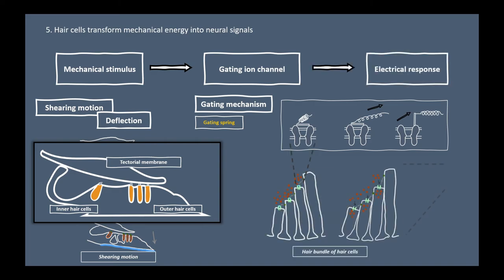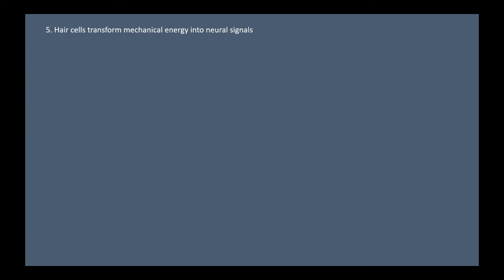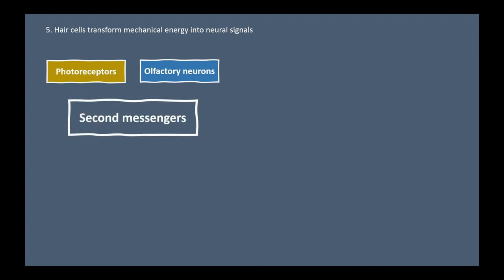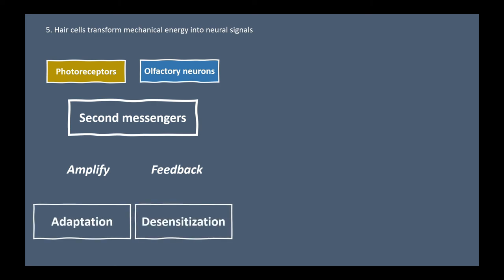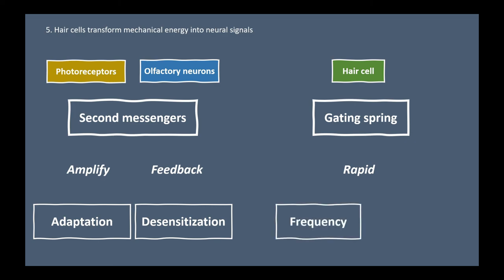This gating spring mechanism is a really fast procedure. Many other sensory receptors like photoreceptors or olfactory neurons use cyclic nucleotides or other second messengers in stimulus transduction. The advantage of this transduction is that a second messenger amplifies the signal and gives feedback within the metabolic pathway, readily permitting adaptation and desensitization. Without those, like hair cells, the advantage is the speed. The speed is really important for hair cells to deal with the frequency of biological relevant sound and using sound arrival time difference to localize the sound.